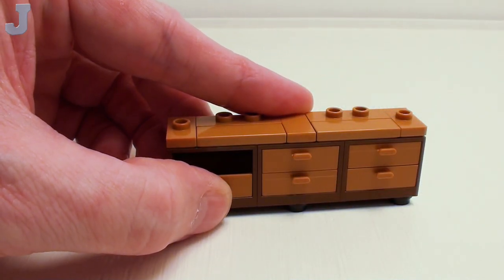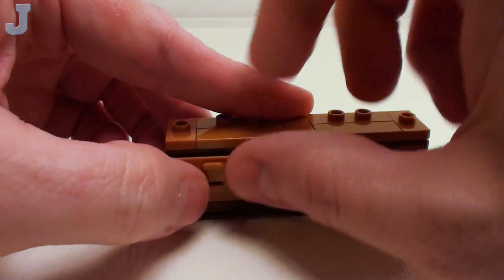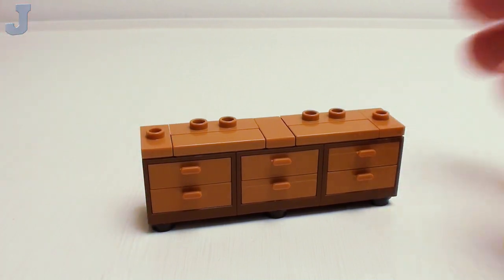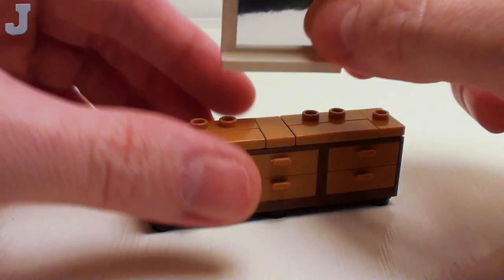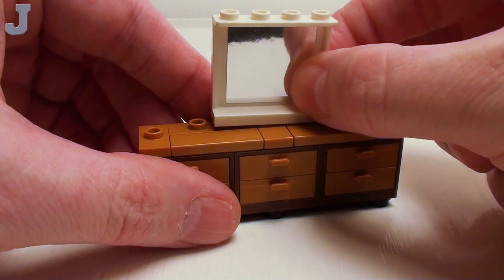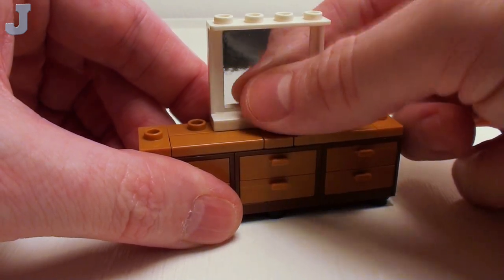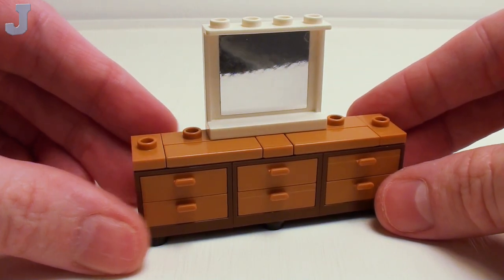If you want, you can make the middle cupboard a door, if you wish. For a mirror, take a 1x4x3 wall element. If you choose, you can put a sticker in there, or you can leave it plain. Set that right in the center.